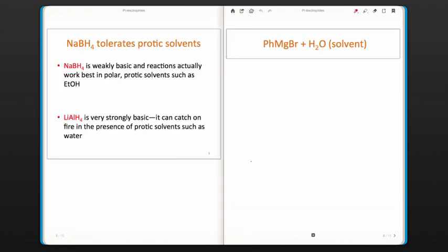One exception to this is if we're using sodium borohydride. Sodium borohydride is a fairly strong nucleophile, but it's not as strong of a base. Reactions with sodium borohydride usually work best in polar protic solvents, such as ethanol. A little bit of an acid-base reaction will take place between the two species, but not so much that it's a detriment to the reaction.